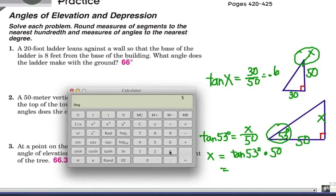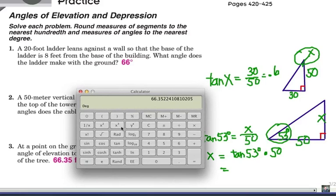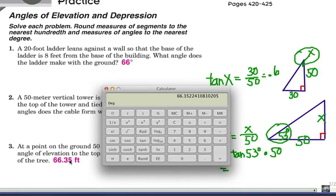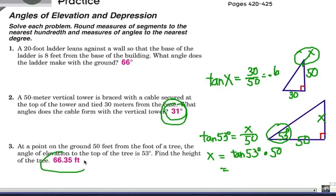Let's put in 53, and we are going to just press the tangent key, 1.32 and so on. Multiply that by 50, 66.35. That is the correct answer I had here, 66.35 feet.